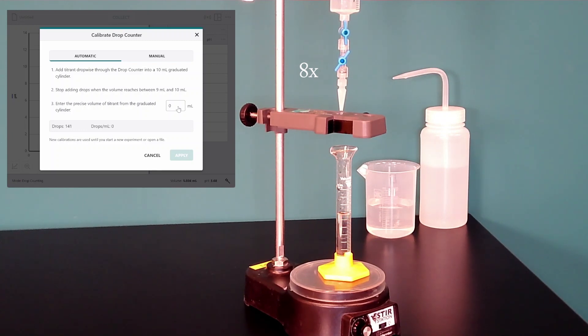So again you want to make sure it's being delivered at about one drop per second until you are between 9 and 10 milliliters in the graduated cylinder.